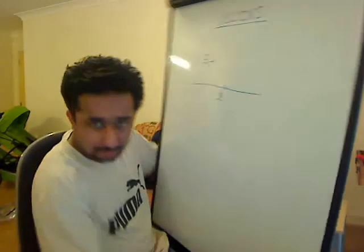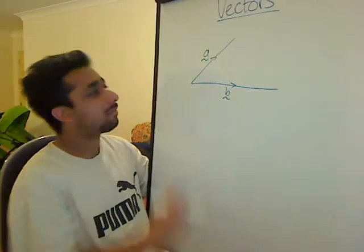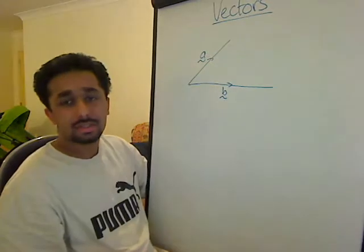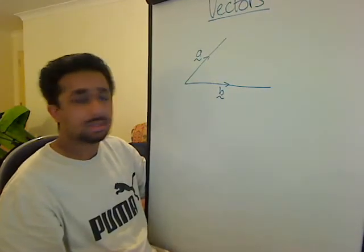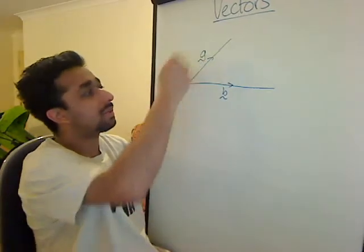What are vectors? Vectors are just simply a distance and a direction, in a certain direction. So that's what the arrows mean, it's that way.